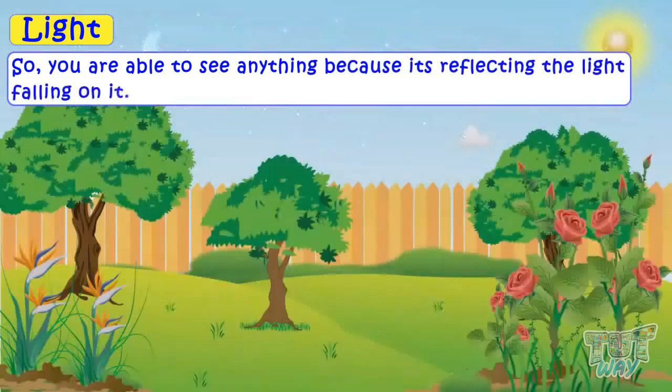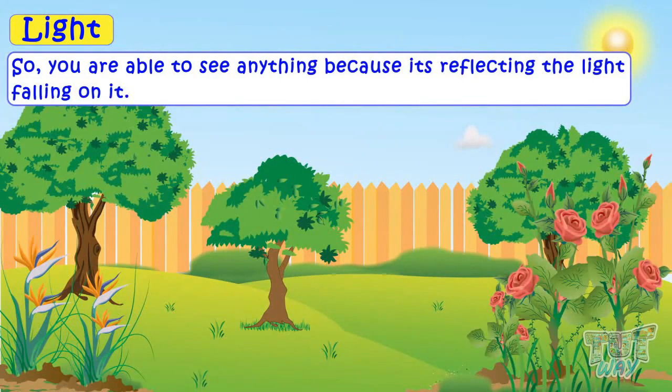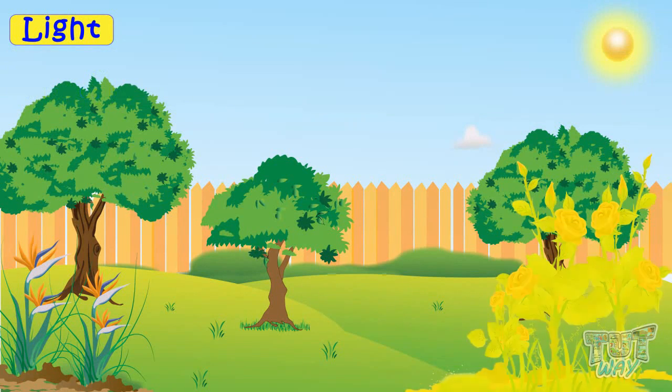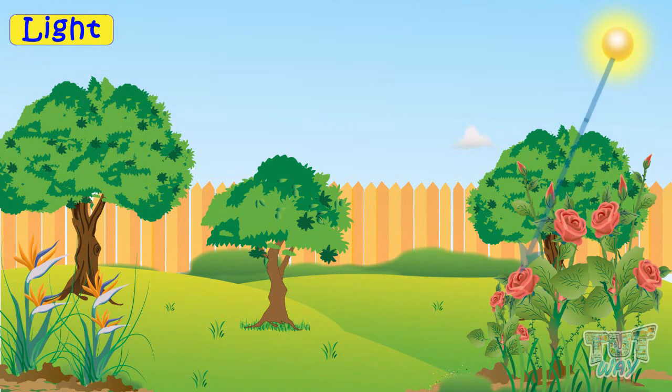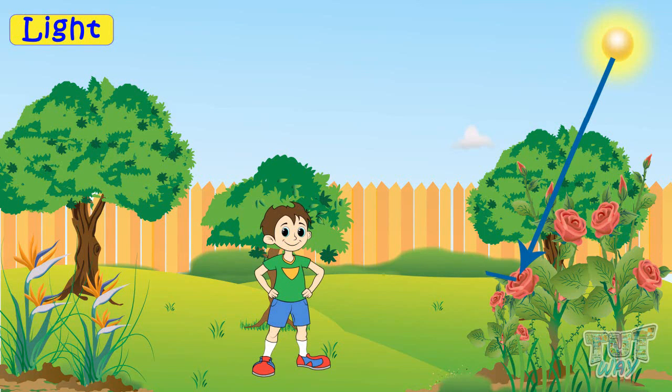So, you are able to see anything because it is reflecting the light falling on it. We can see this flower because light from the sun is falling on it. And light is always reflected off the thing on which it falls. And that reflected light from those objects makes us see that object.